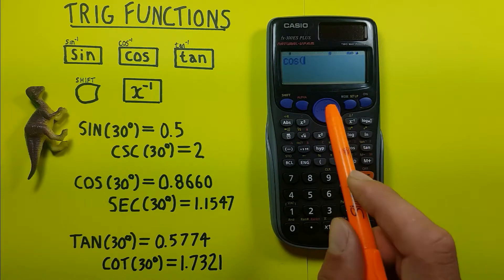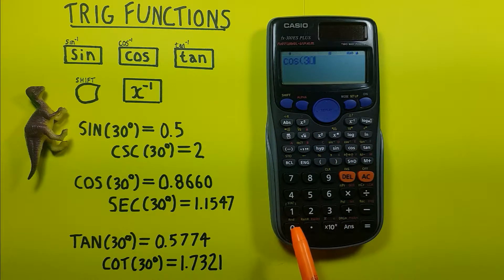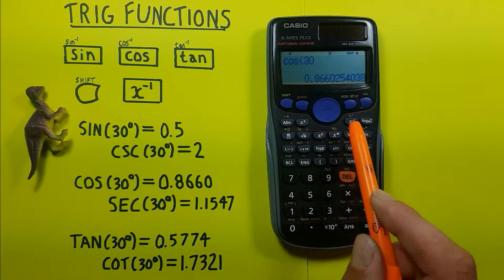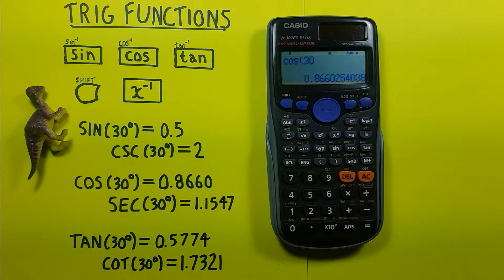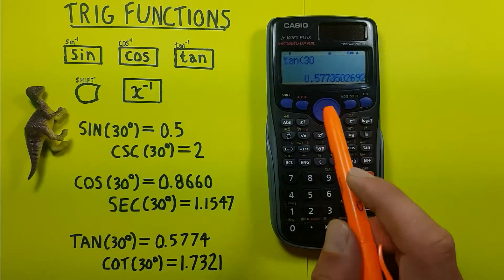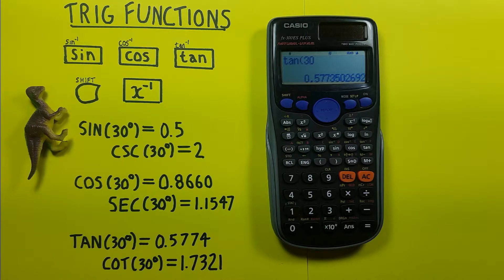We can do the same with cosine of 30, which gives us this and converts to 0.8660. And tan of 30 converts to 0.5774.